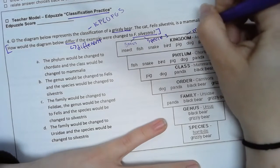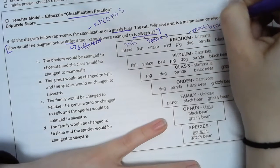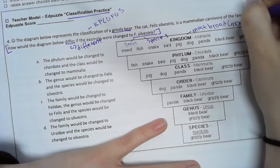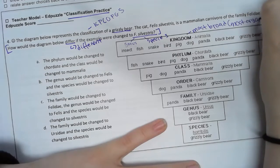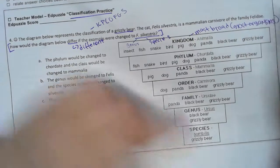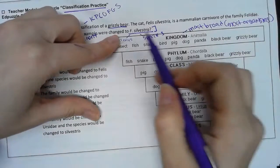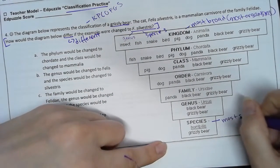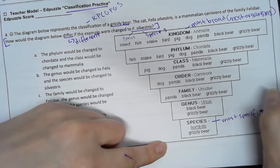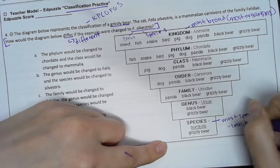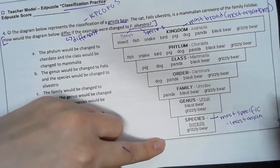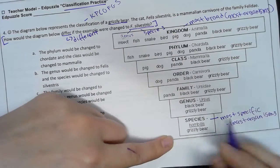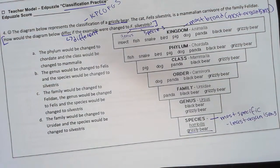The kingdom is the most broad and has the most organisms. Notice how it is the biggest on the pyramid. Species is the most specific, meaning it has the least organisms. As you see here, the only organism is the grizzly bear, which is what this whole thing is showing.